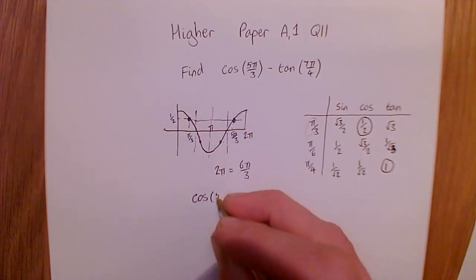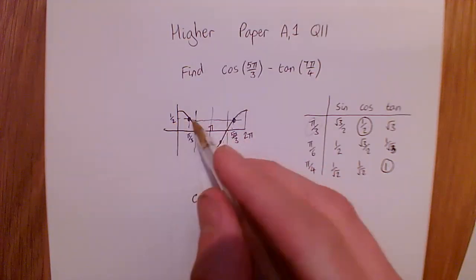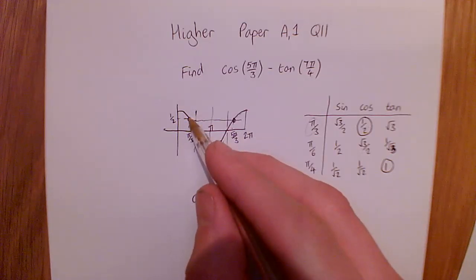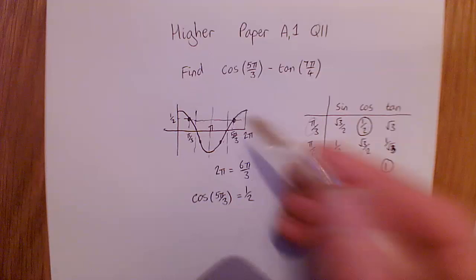So that tells us cos of 5π/3 equals a half on the graph, because we can see it's got the same value as cos of π/3, and it's also above the axis again.